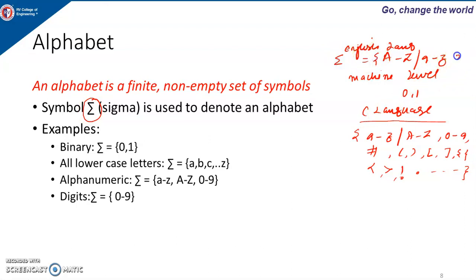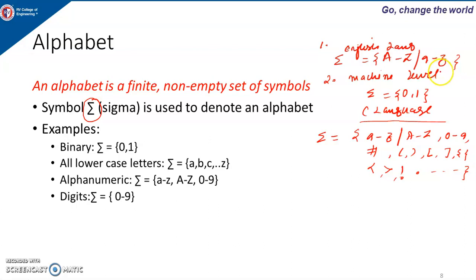An alphabet is a finite, non-empty set of symbols. The sigma symbol is used to represent the alphabet. For English language, sigma will be all the letters. For machine level language, sigma will be 0 and 1. For C language, sigma will be all those symbols. Alphabet will be the symbols used to frame the words for any language, and it must be a non-empty and finite set. Non-empty because any language must have some symbols — it cannot be empty — and finite because it cannot be infinite.